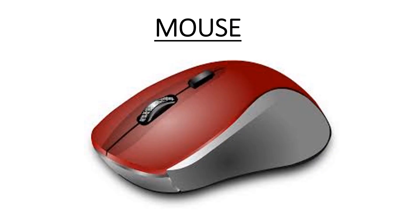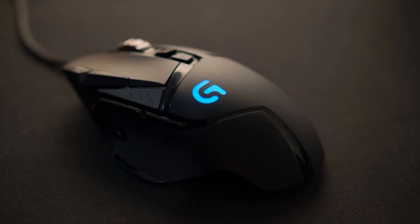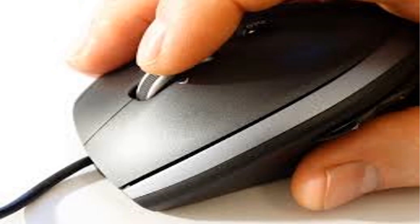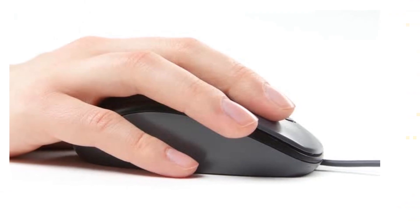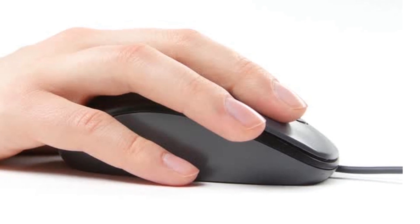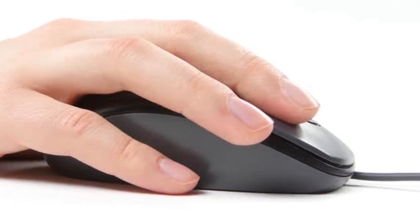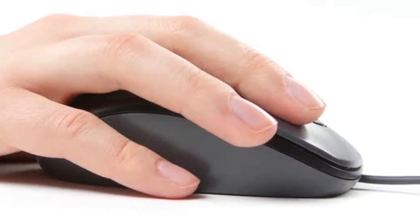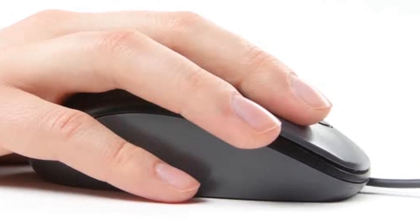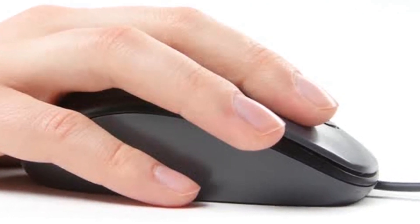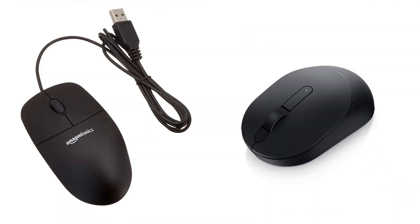Mouse. A mouse interacts with a computer through a process known as point and click. When a user moves the mouse, the pointer moves in a corresponding direction on the computer's monitor screen. A mouse can be wired or wireless.